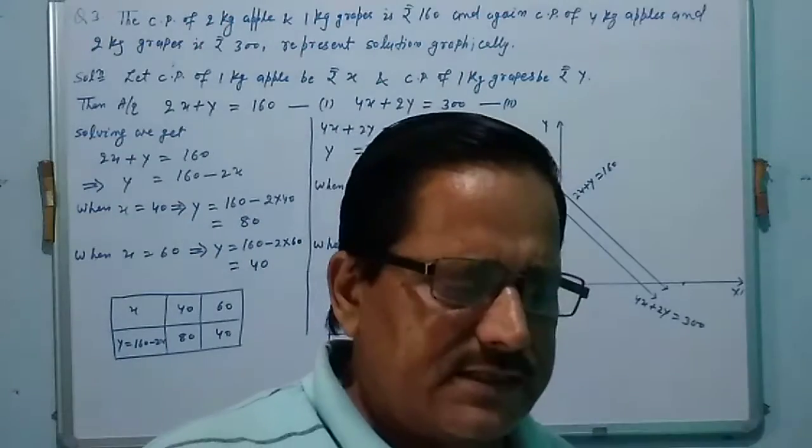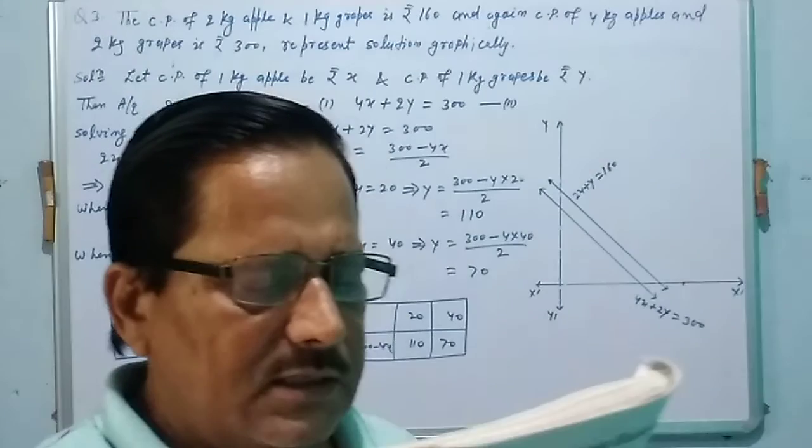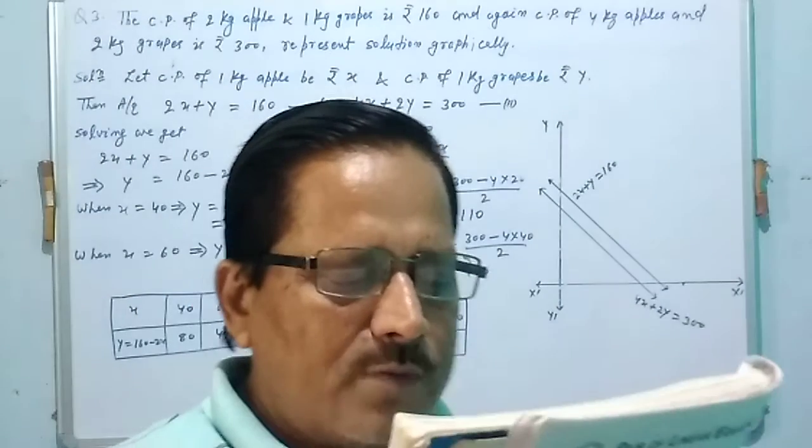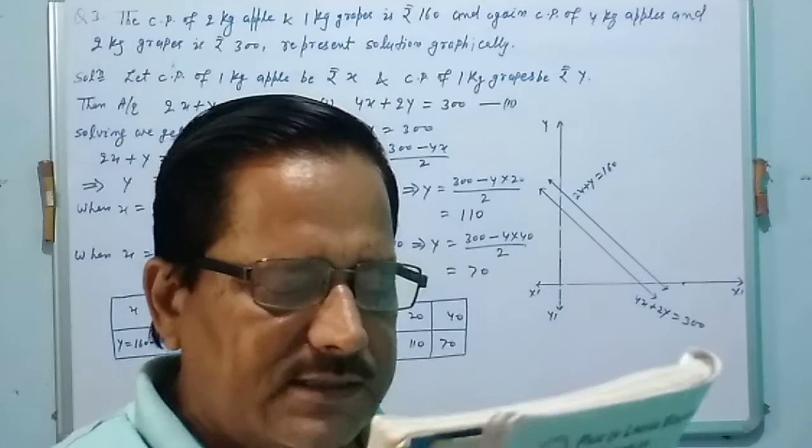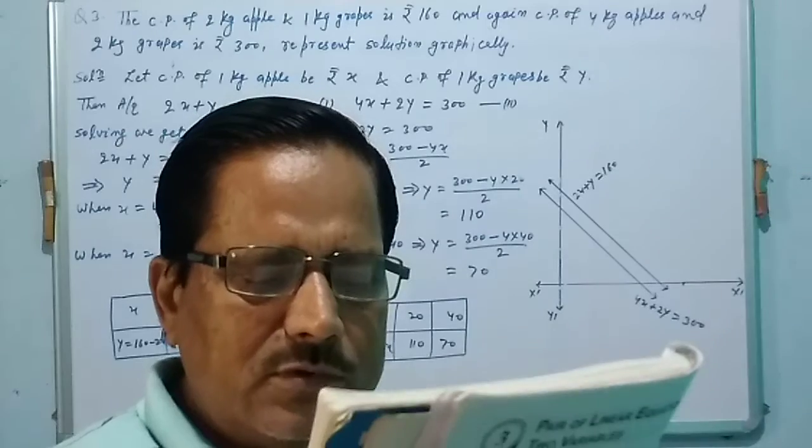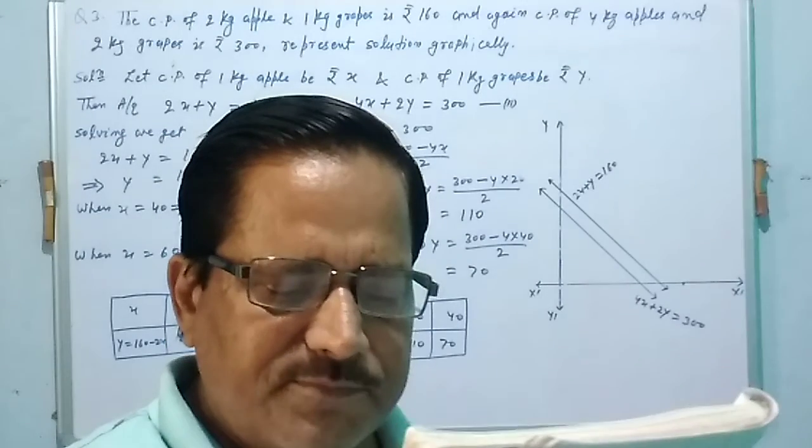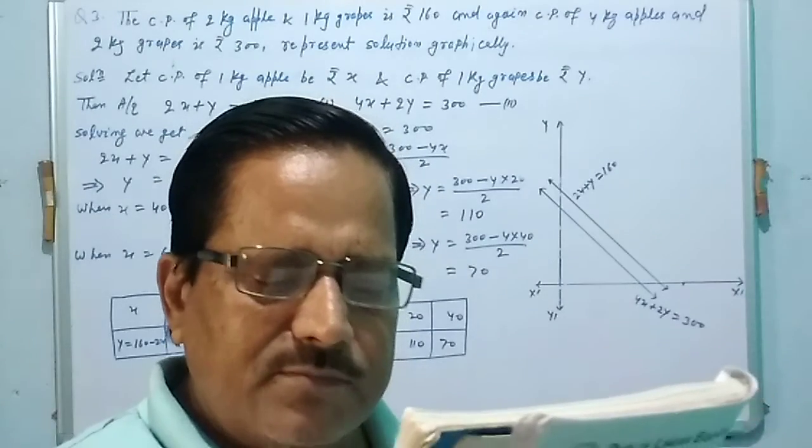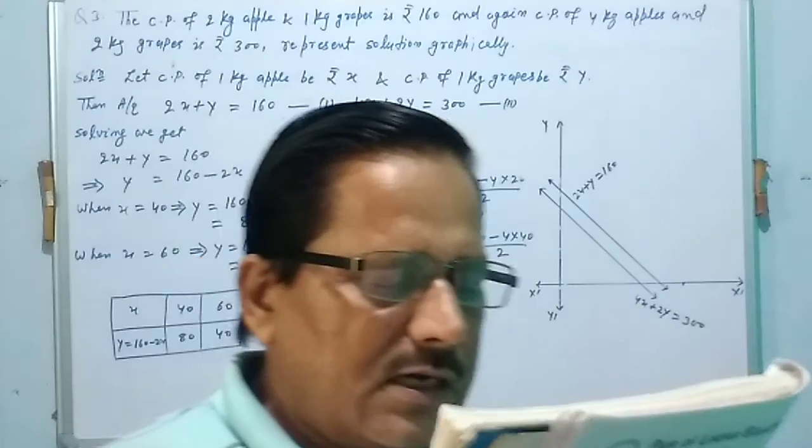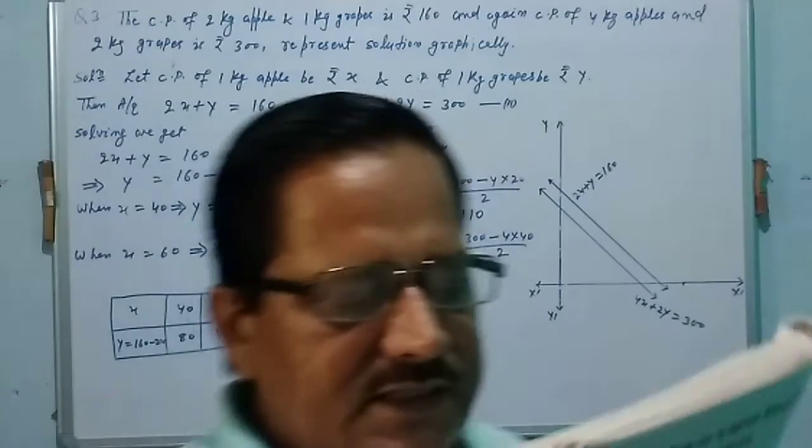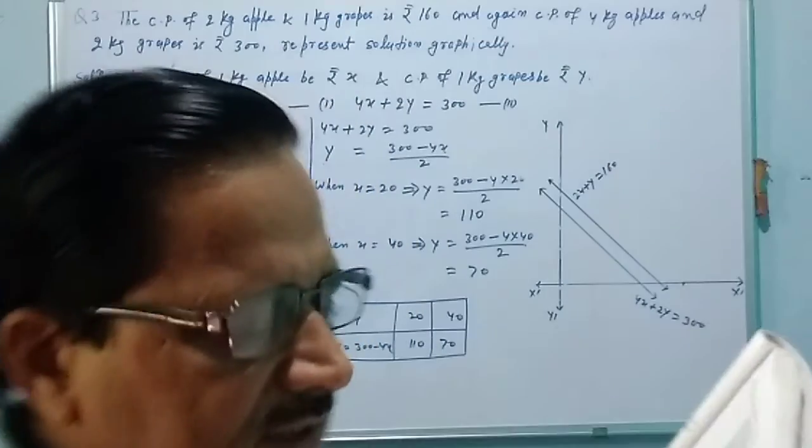We have an NCERT book question that the cost of 2 kg apple and 1 kg grape on a day was 160 rupees. And after a month, the cost of 4 kg apple and 2 kg grape is Rs. 300.